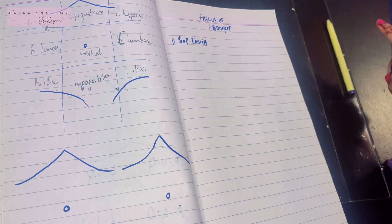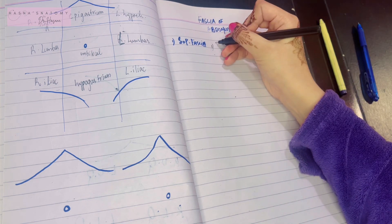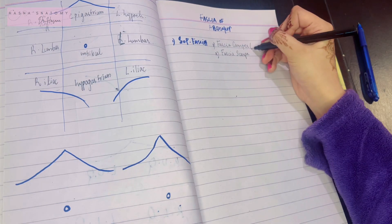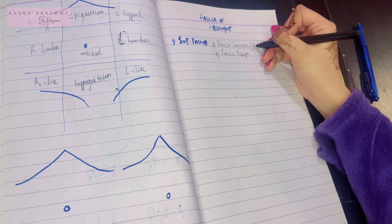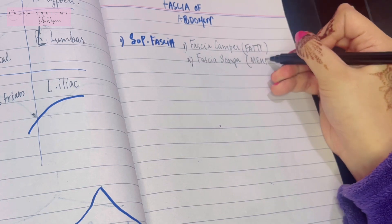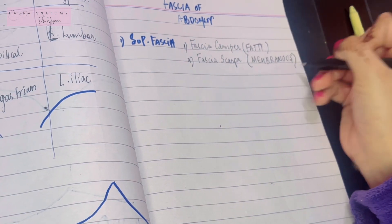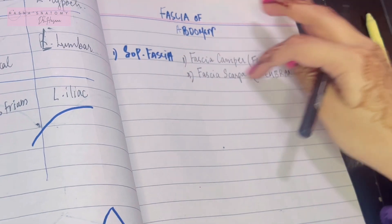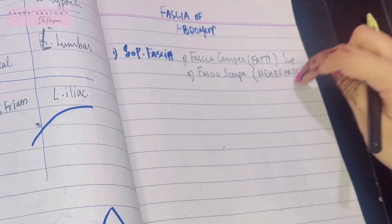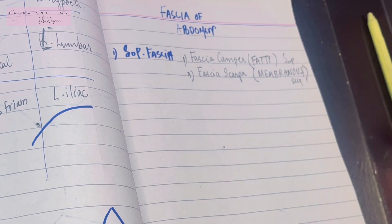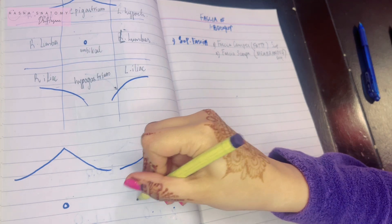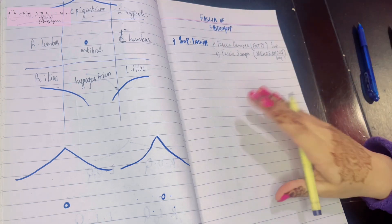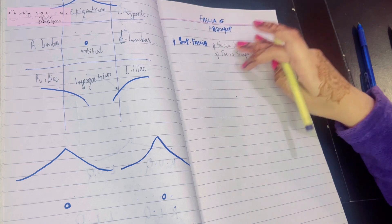The first point to remember is that the superficial fascia of the abdomen is divided into two layers: the fascia of Camper and the fascia of Scarpa. The fascia of Camper is the superficial fatty layer, while the fascia of Scarpa is a membranous layer. Unlike other regions, this splitting of the superficial fascia mostly occurs below the umbilicus. Above the umbilicus, both fascias are merged into just one layer, but below the umbilicus there are two distinct layers.